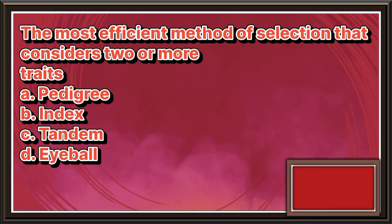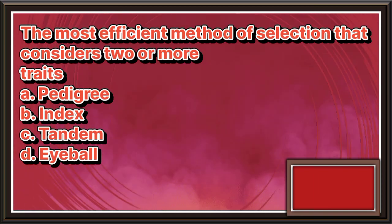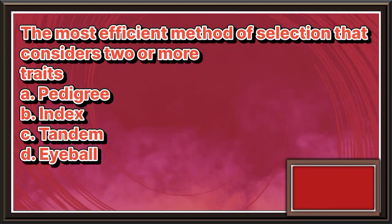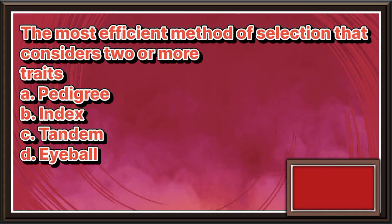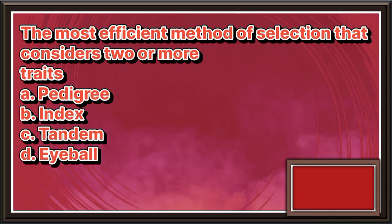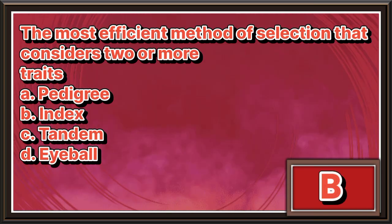The most efficient method of selection that considers two or more traits. a. Pedigree. b. Index. c. Tandem. d. Eyeball. The answer is letter b.